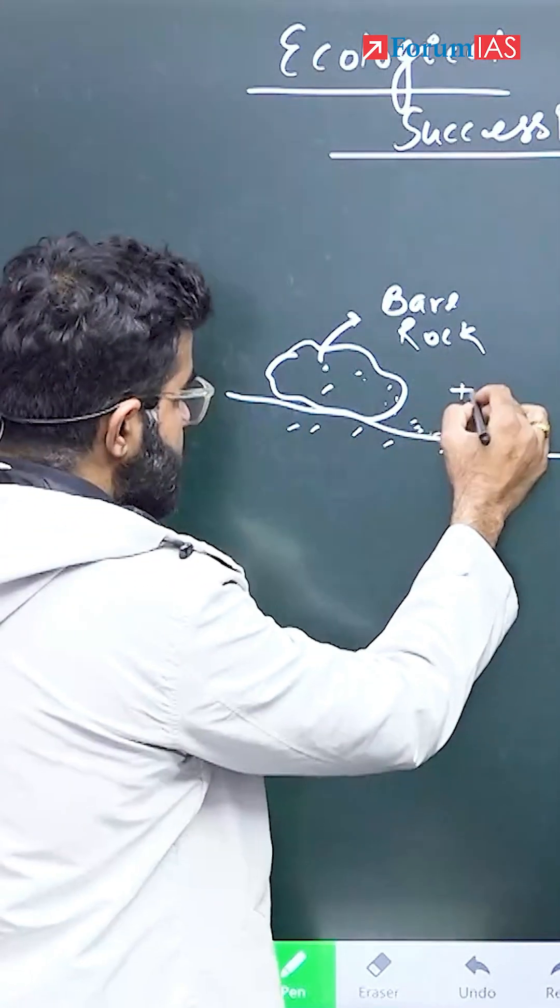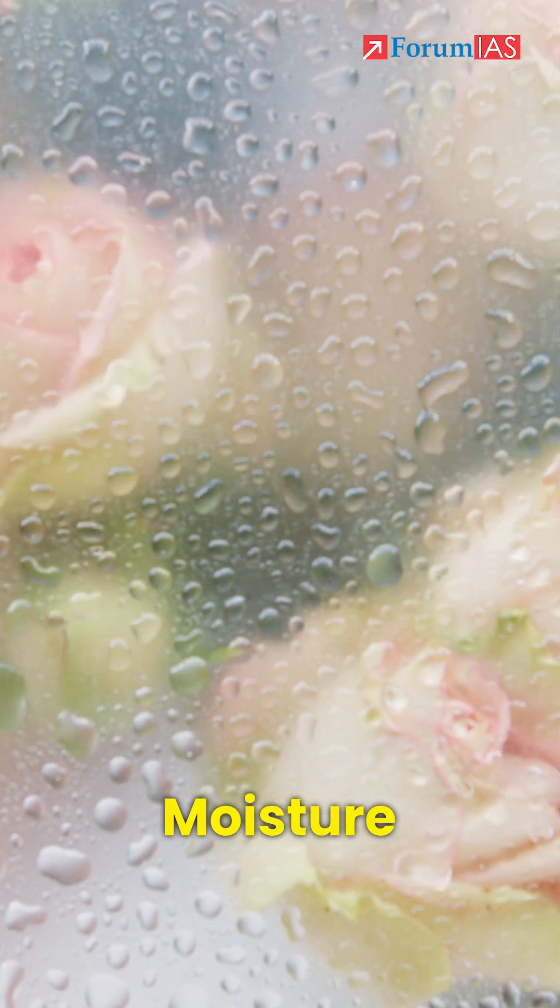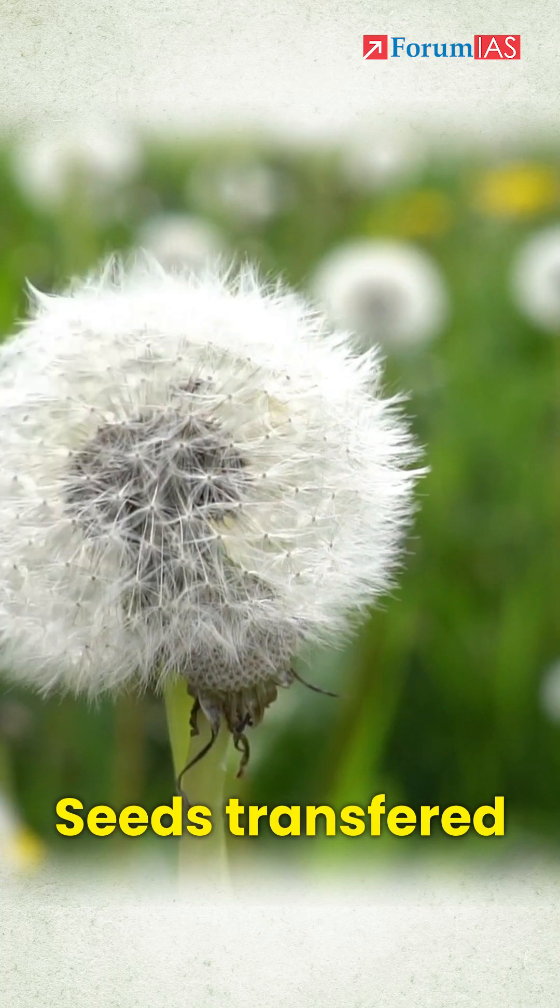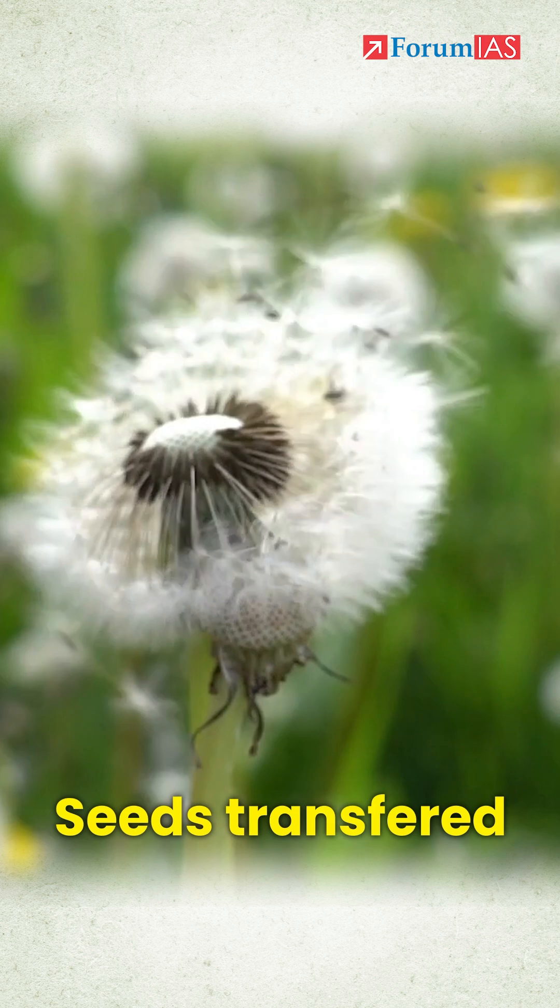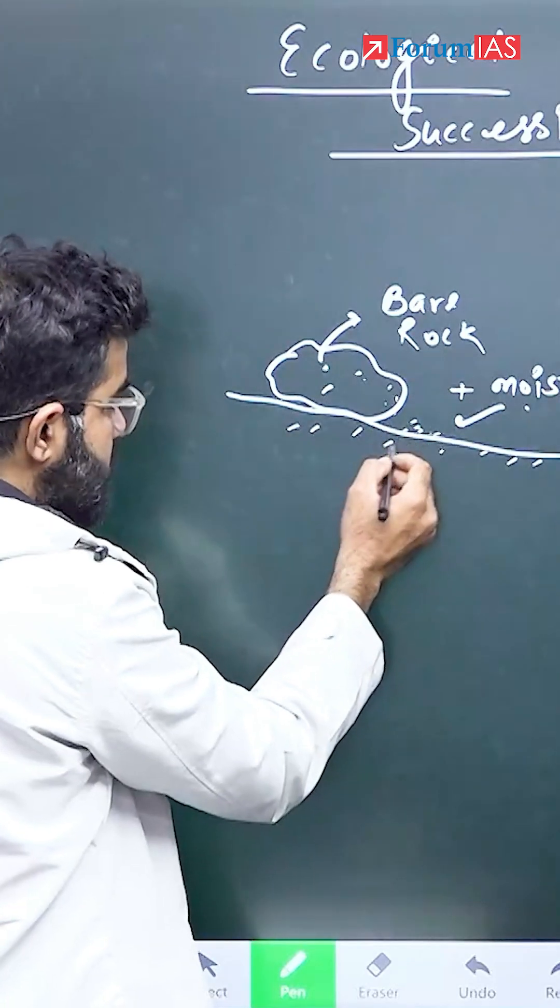Let's say in the atmosphere, already in that area, there was moisture. Seeds were transported by, let's say, by any medium. Winds were there. Because of those, now moisture is there. Some amount of, what is the rock?